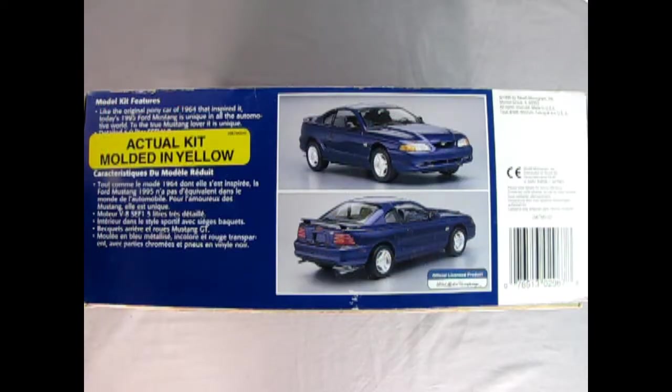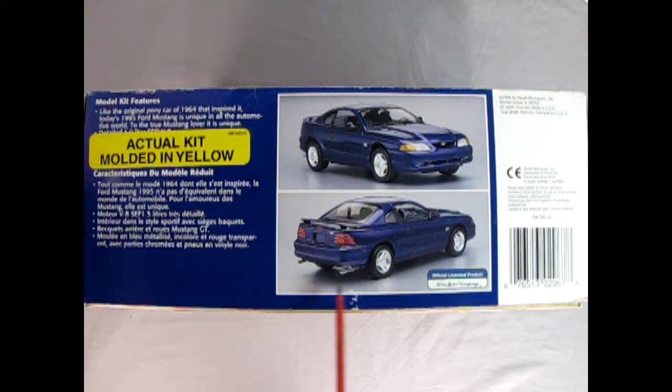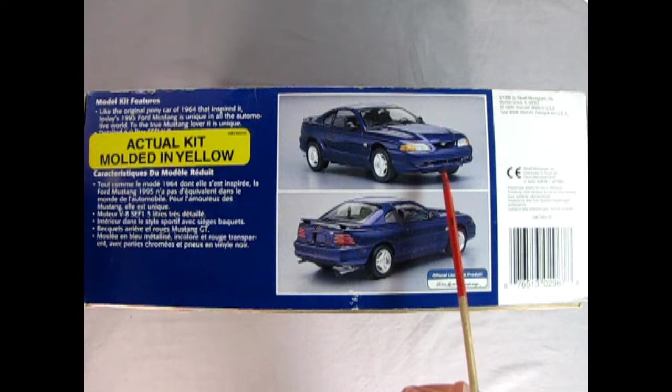On this side of the box we are confronted with this gigantic sticker that says actual kit molded in yellow. The model kit features are right here and then we've got our front three-quarter and rear three-quarter of the '95 Mustang and you can see just how they styled it like the '64 with that same kind of grille in front and the lights in the back.